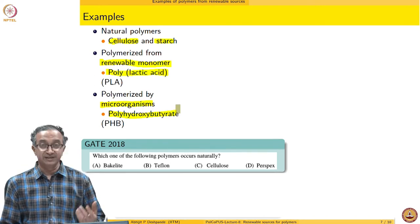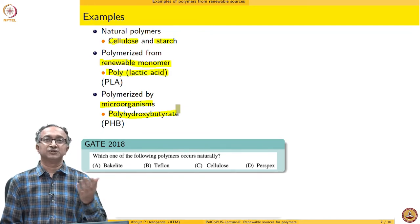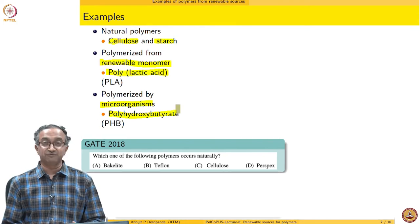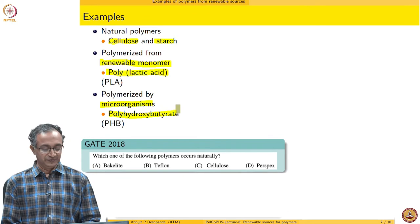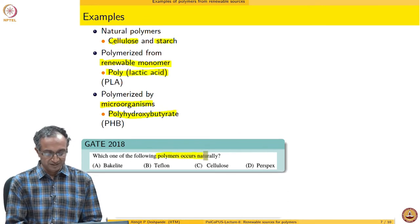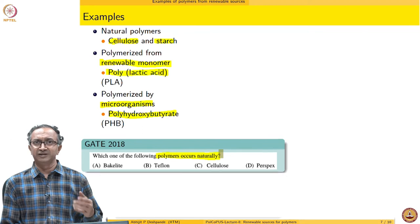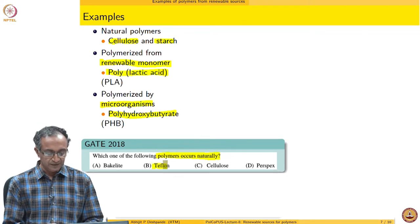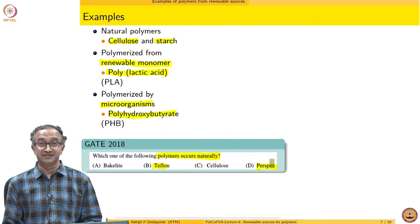Just to think in terms of the distinction between natural and synthetic polymers in the context of renewability — here is a question: which of the following polymers occurs naturally? In this course, we have already discussed Teflon and Perspex in previous lectures. In case you have not heard of Bakelite, please go and read about it — it is a historically very important polymer.